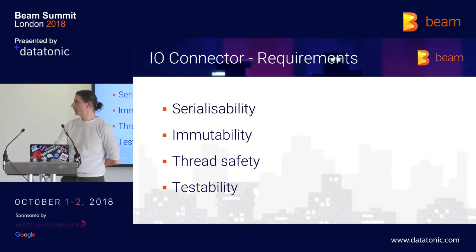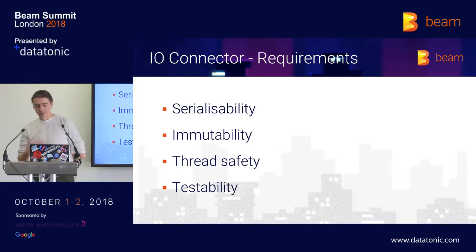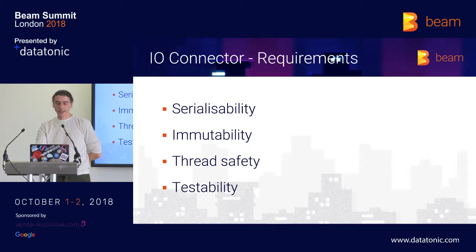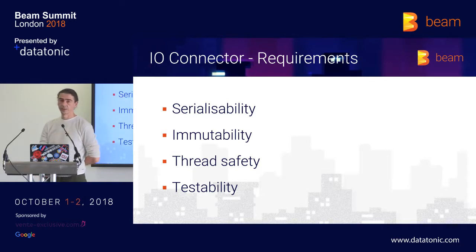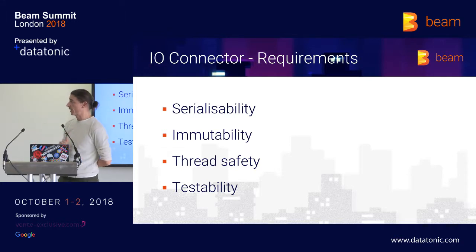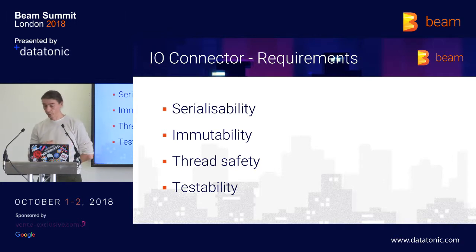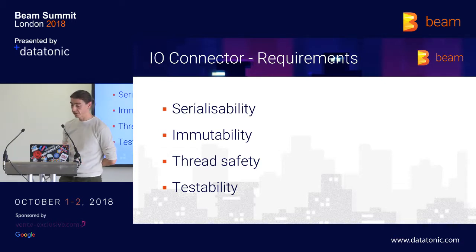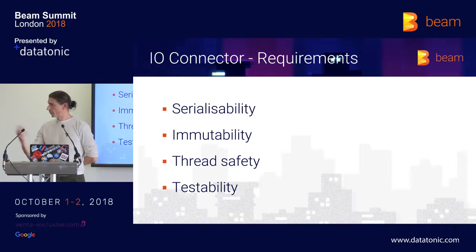Regarding IO connectors, the Apache Beam SDK provides documentation to guide you in writing new IO connectors. There are basic requirements to take into account before starting new IO connector development. First and most important is the serializability of your code — since the code of your connector will be distributed to different worker instances, your code has to be serializable, which might be a pain point or not.